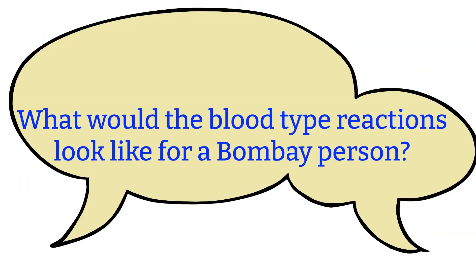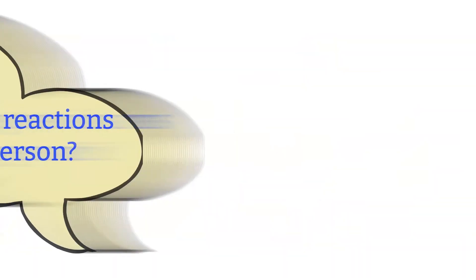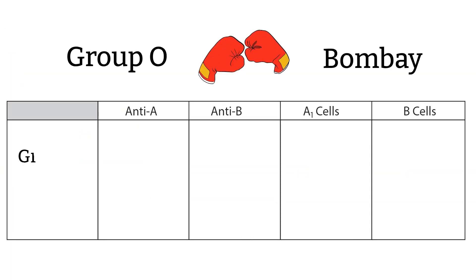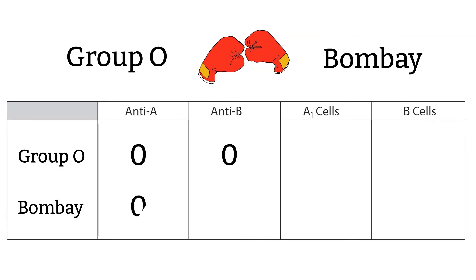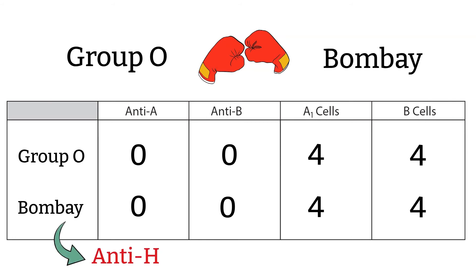What would the reaction look like for a Bombay person? If we perform a blood type on a Bombay person, the forward and reverse reactions look like a type O person. There would be no reactions in forward typing because a Bombay patient does not have A or B antigen, the same as group O blood type — no antigen on RBCs means no agglutination. There will be strong reactions in reverse typing because the individual carries A and B antibodies in the plasma. Note that a Bombay person also contains anti-H, which reacts with group O RBCs and can cause hemolysis.